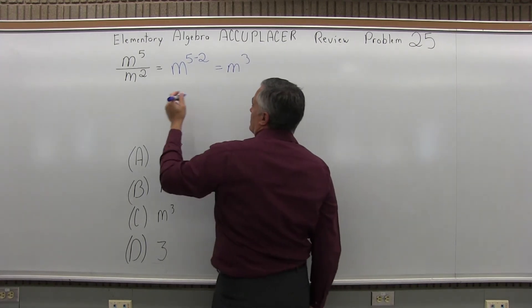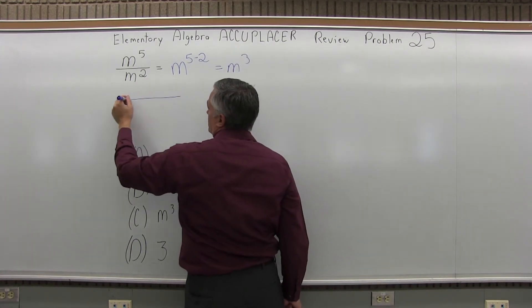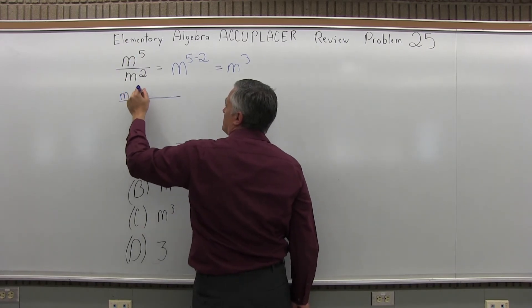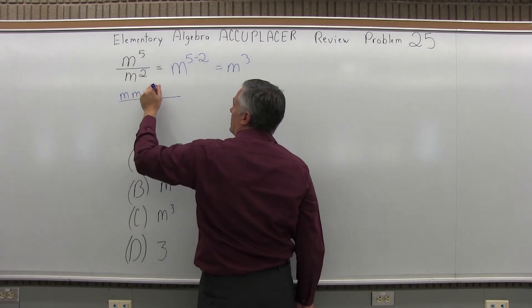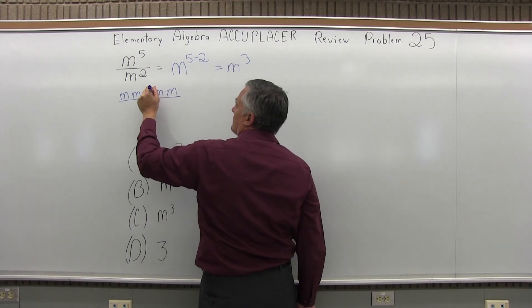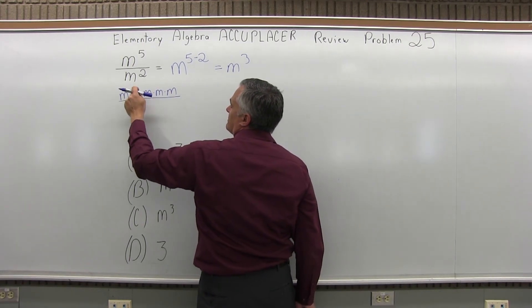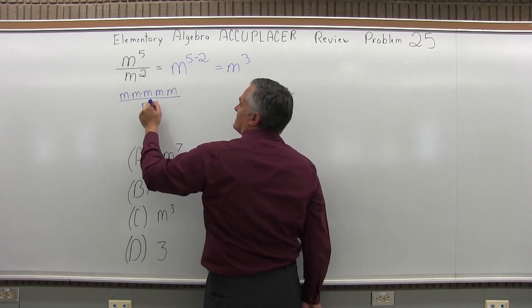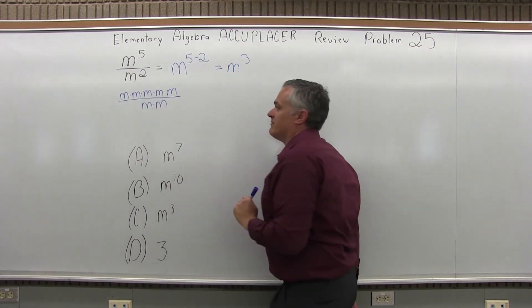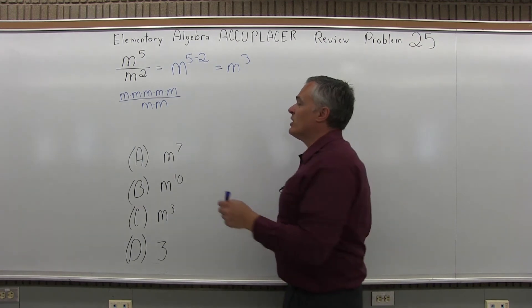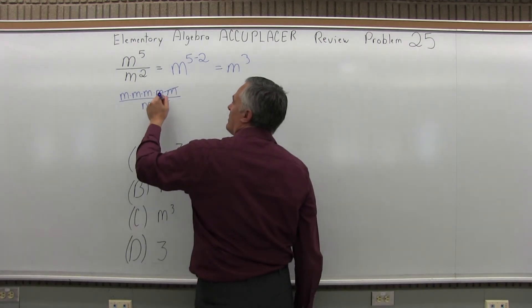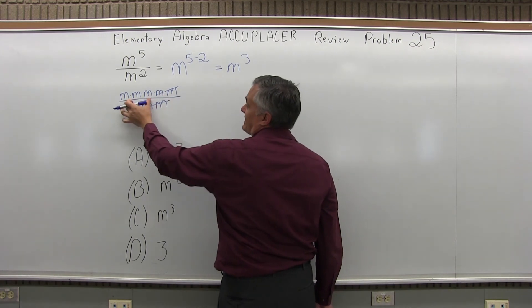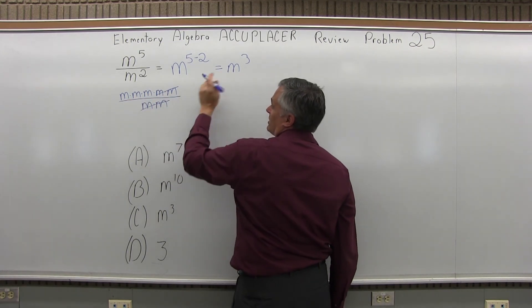Now, the reason why that works — and you don't really have to know the reason why it works, but it's very easy to show — the numerator m to the fifth is five m's multiplied together: m times m times m times m times m. The denominator m to the second is m times m. By subtracting, what you're doing is counting how many are left behind after you cancel all the ones that match up. That's why you subtract, and that's how you get m to the third.